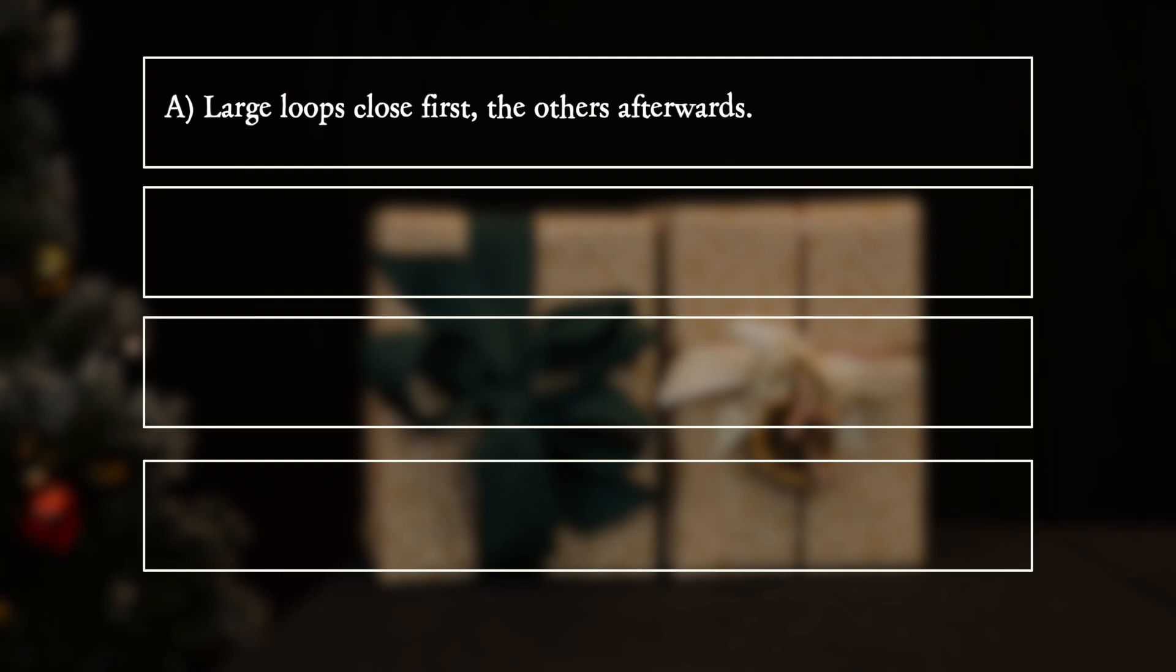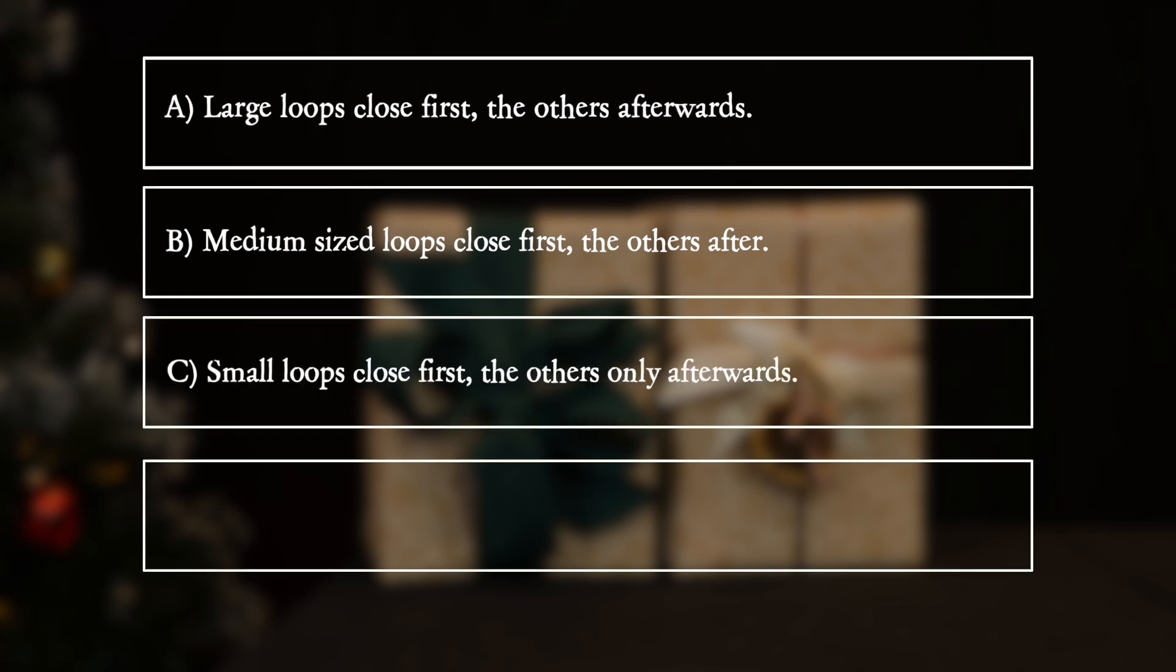A: Large loops close first, the others afterwards. B: Medium-sized loops close first, the others after. C: Small loops close first, the others only afterwards.